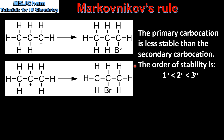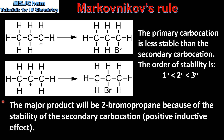The order of stability of carbocations is: primary carbocations are the least stable, and tertiary carbocations are the most stable. The carbon atoms bonded to the carbon with a positive charge produce what's called a positive inductive effect. The more carbon atoms bonded to this positively charged carbon, the greater the positive inductive effect and the greater the stability of the carbocation.